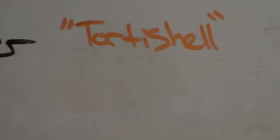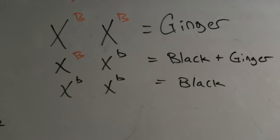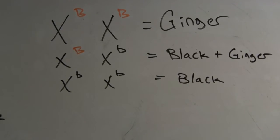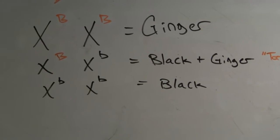And the reason it's called tortoiseshell is because in this particular circumstance, in the females, the coat color is co-dominant. That means if a cat has an uppercase B allele and a lowercase b allele, a female cat, then it'll be tortoiseshell color. It'll be black and ginger.